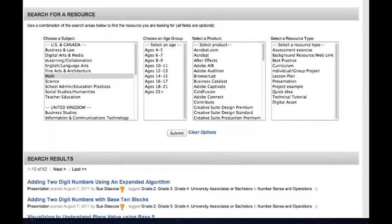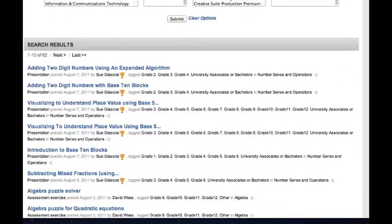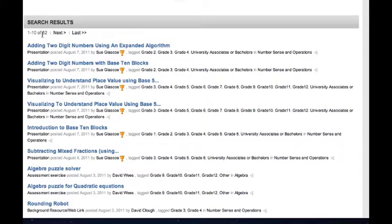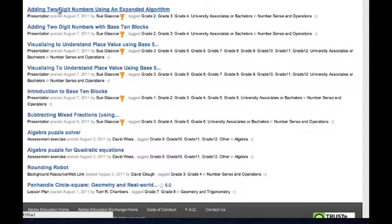So I'm going to scroll down. And we've got, look, 62 search results. So that's not too bad. And I'm just going to take the one that's right here at the top. Adding two-digit numbers using an expanded algorithm by Sue Glasgow. And Sue, if you ever watched this video and I just mispronounced your name, I apologize.